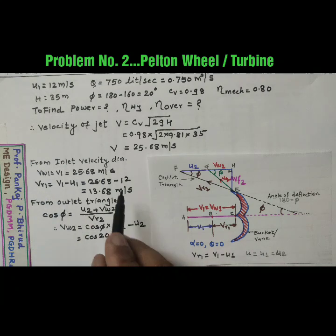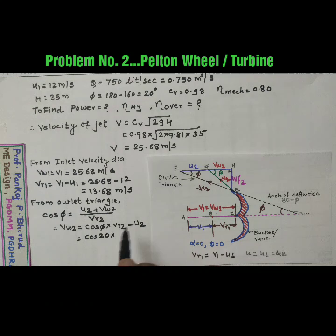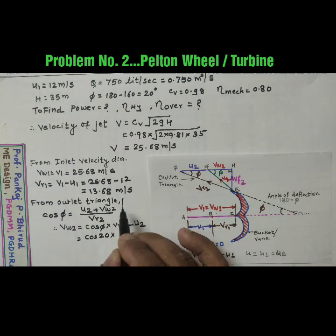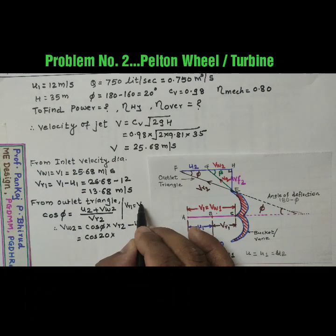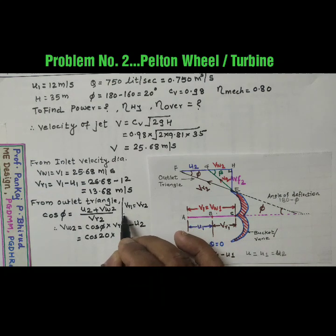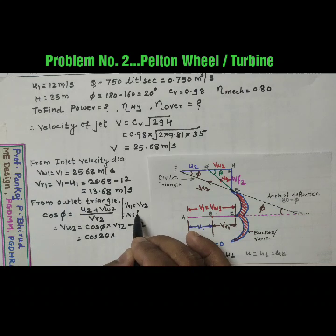As there is no friction, so put here Vr1 is equal to Vr2 as no friction.